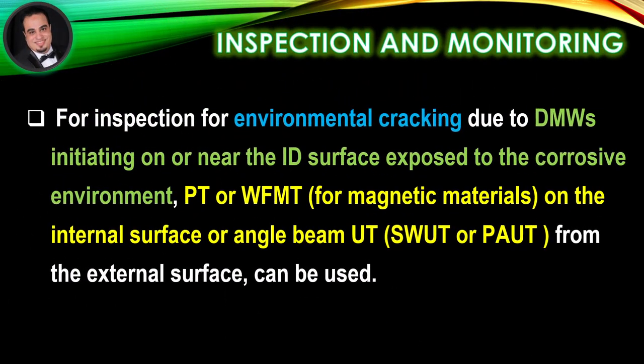For inspection for environmental cracking due to dissimilar metal weld cracking initiating on or near the inside diameter surface exposed to the corrosive environment, liquid penetrant testing or wet fluorescent magnetic particle testing for magnetic materials on the internal surface, or angle beam ultrasonic testing, shear wave ultrasonic testing, or phased array ultrasonic testing from the external surface can be used.